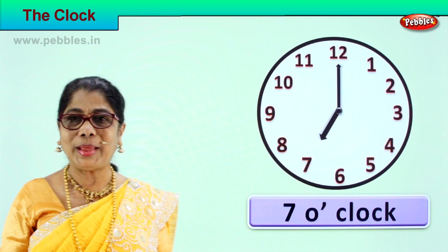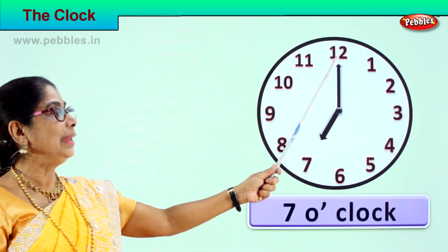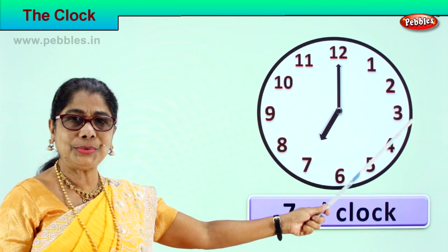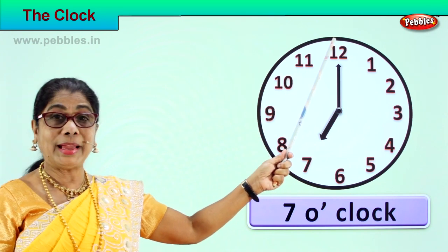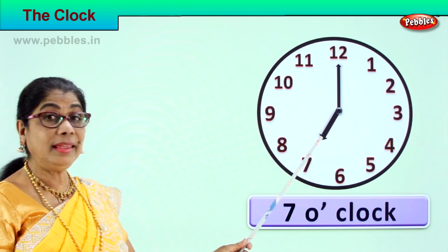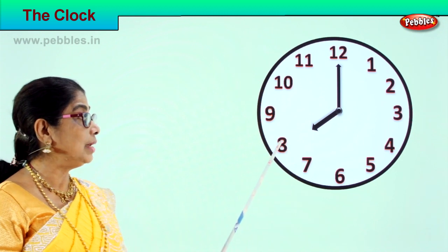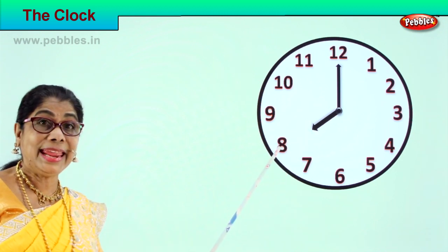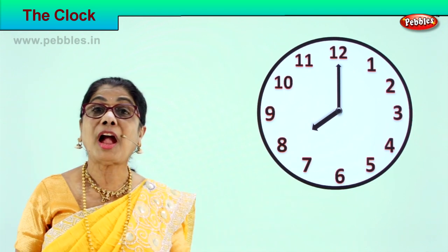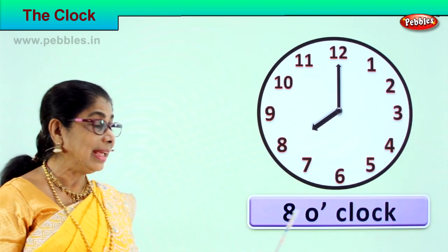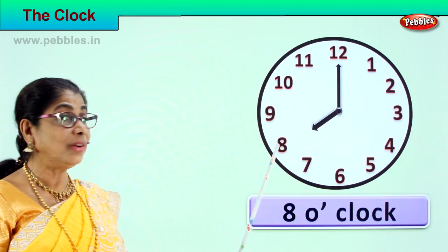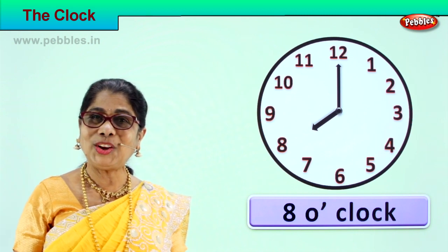Now the minute hand goes again from one to two, three, four, five, six, seven, eight, nine, ten, eleven — it comes back to twelve and the hour hand from seven shifts to eight. Look at the position — the hour hand is on eight and the minute hand is on twelve. How do you read the time? What time is it? You read it as eight o'clock.